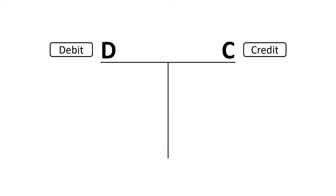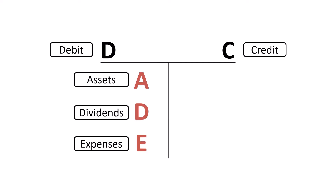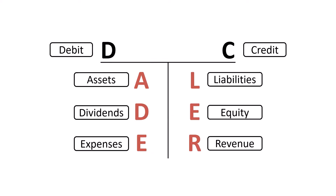In a previous video, I covered understanding debits and credits in accounting by using DC ADE LER. DC stands for debits and credits. ADE stands for assets, dividends, expenses — accounts that usually have a debit balance. LER stands for liabilities, equity, revenue — accounts that usually have a credit balance.